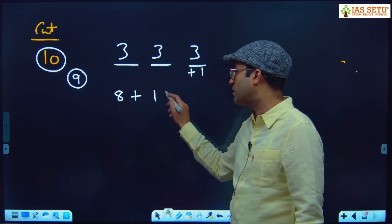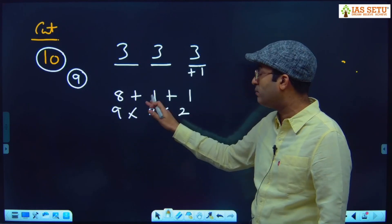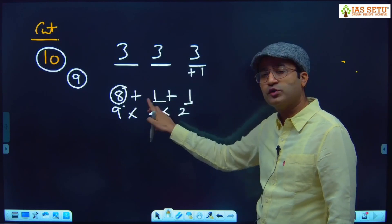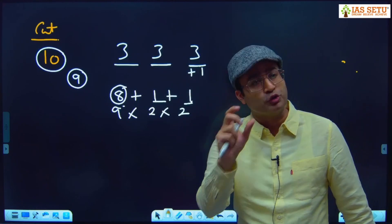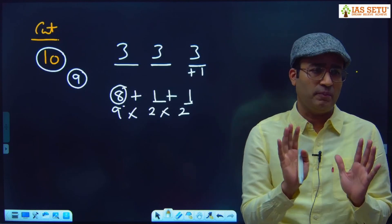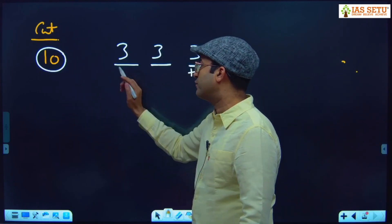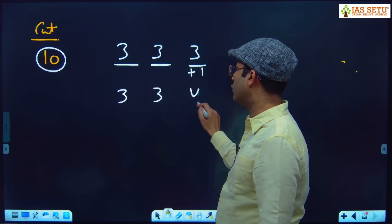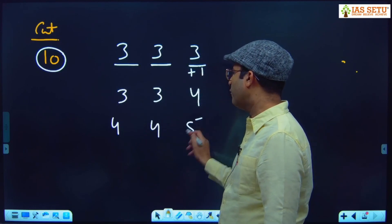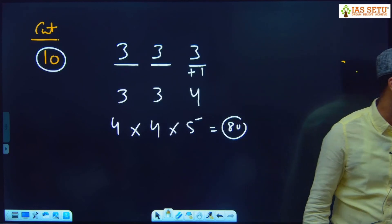The best distribution of 10 cuts is 3 cuts on x-axis, 3 cuts on y, and 4 cuts on z. Minimum disparity, since uniform distribution is not possible. So: 3 cuts give 4 pieces, 3 cuts give 4 pieces, 4 cuts give 5 pieces — 4 × 4 × 5 = 80. With 10 cuts, the maximum number of pieces possible is 80.